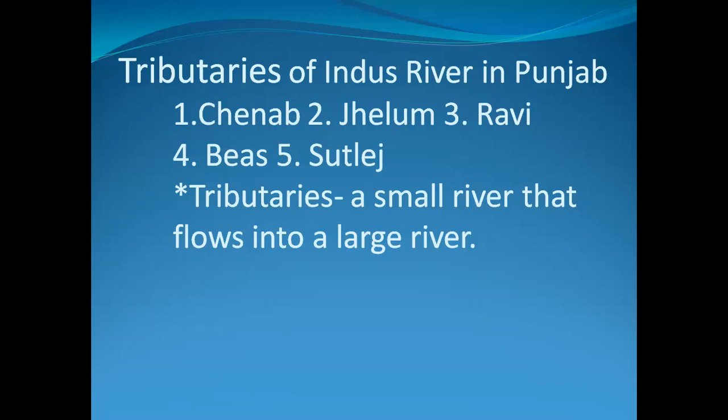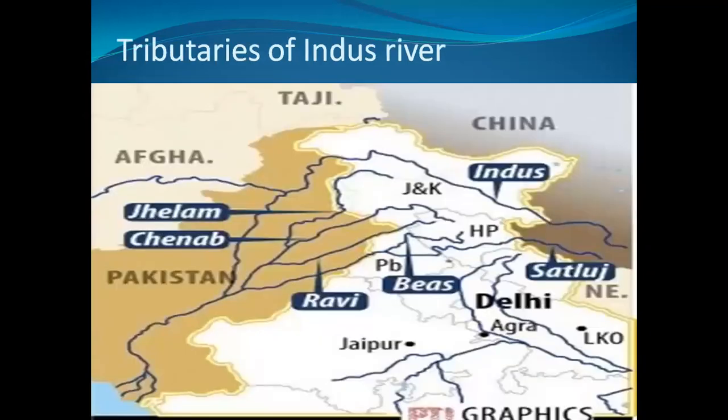The five rivers of Punjab are Beas, Chenab, Jhelam, Ravi and Satlaj. In the state of Punjab, these five rivers make the land fertile and very good for agriculture.